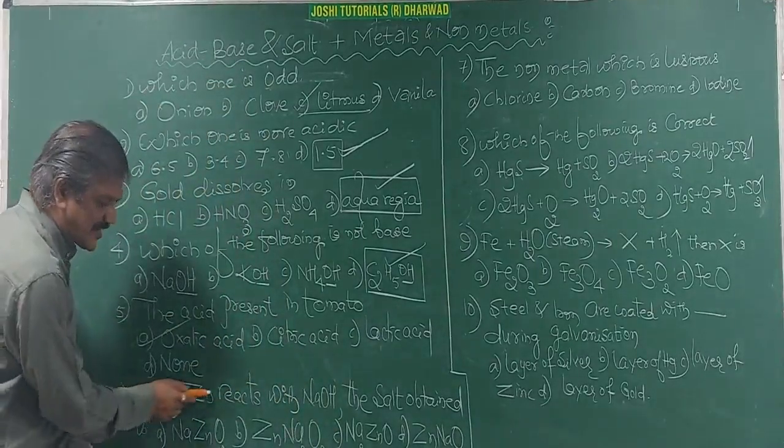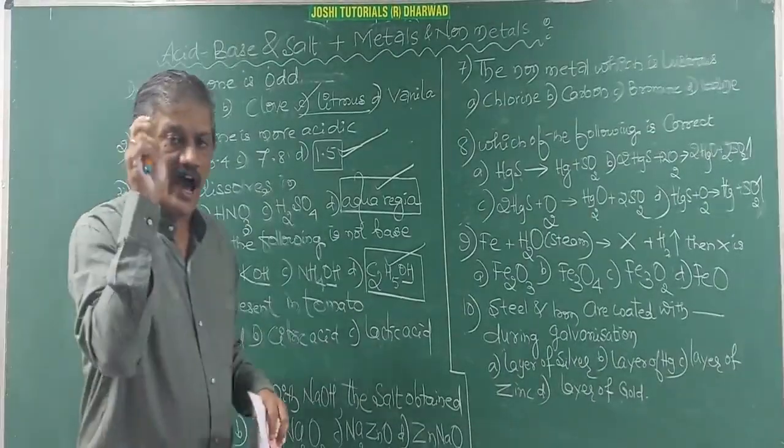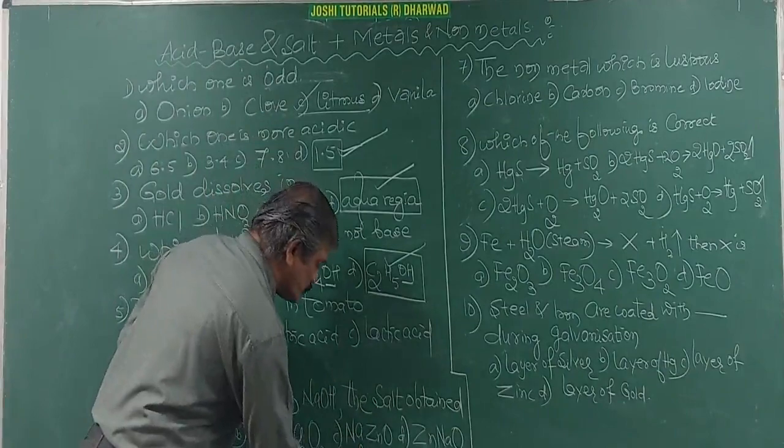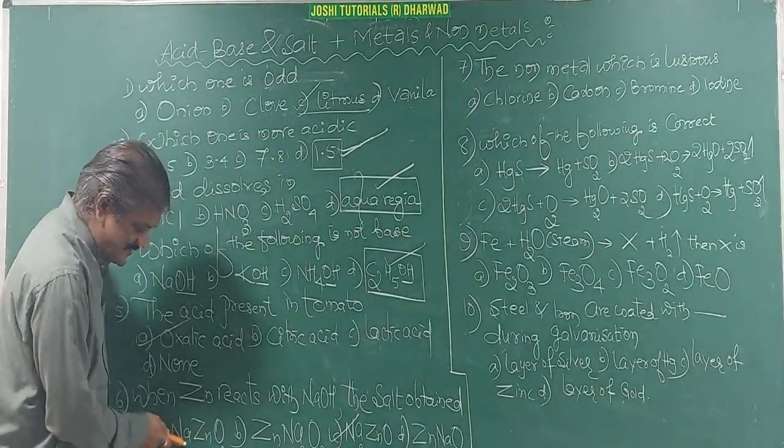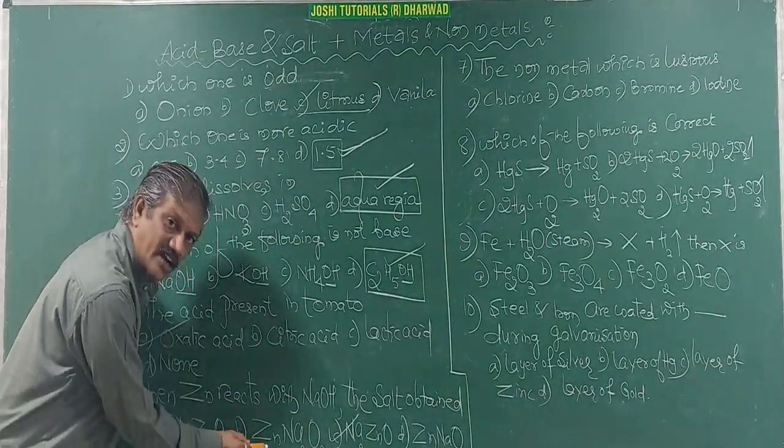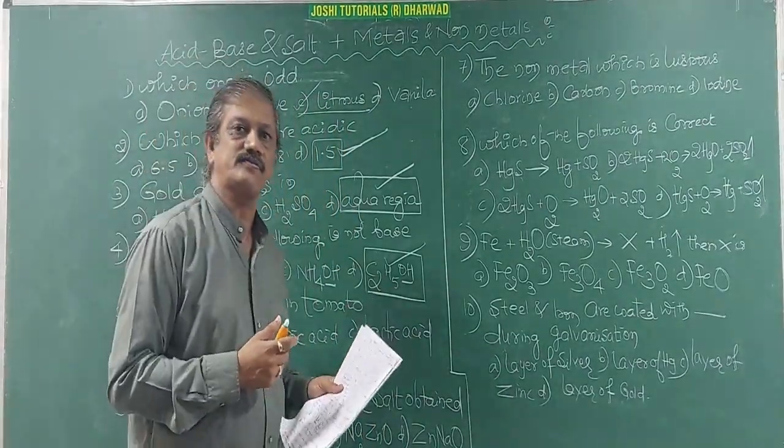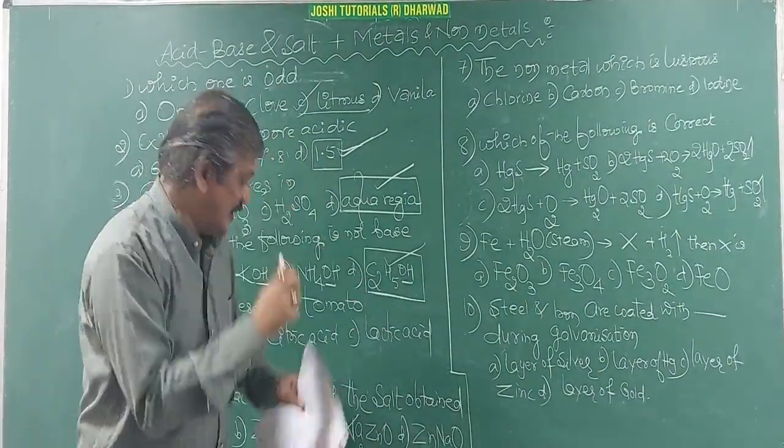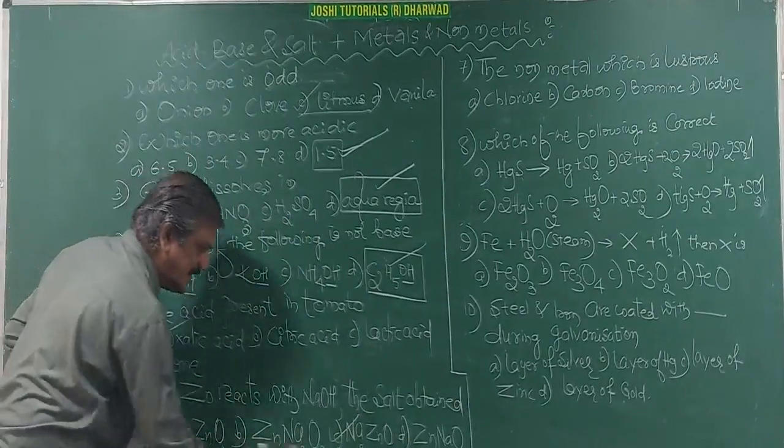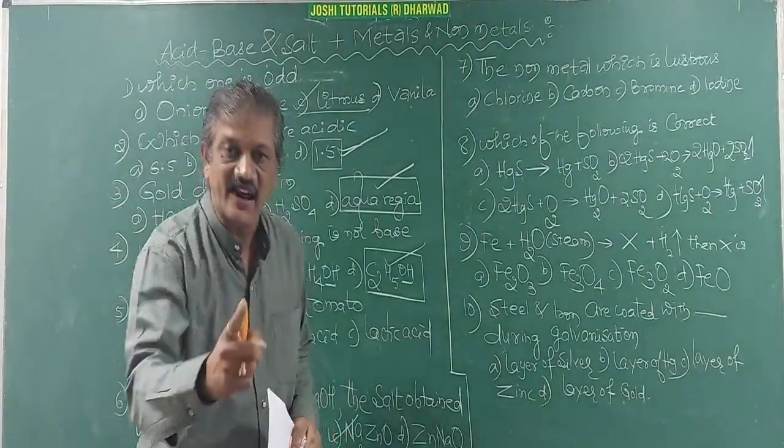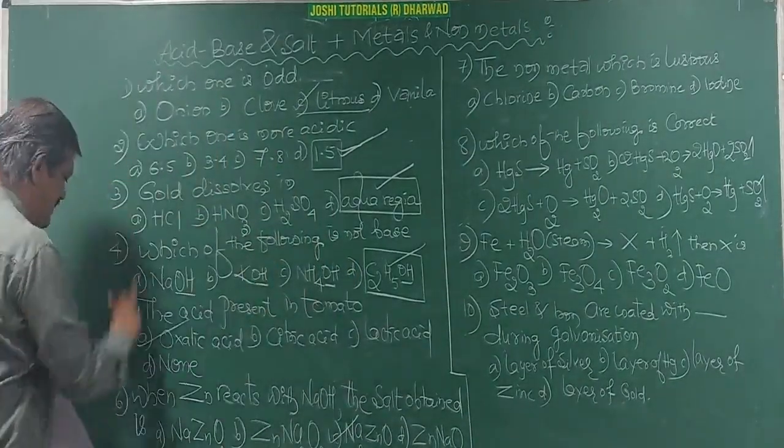When zinc reacts with NaOH, sodium hydroxide, the salt obtained is... You must know the answer in a perfect manner. That is Na2ZnO2, sodium zincate. Sodium, ZnO2. It is Na2. So this is starting with Zn, no answer. How to analyze? I am giving you the hint. Sodium zincate, you must know the name, then you must know the formula. So these two options are wrong, then these two are correct. But among these, one is perfect, perfectly right. Then you must know the formula. This is how you can study the chapter.